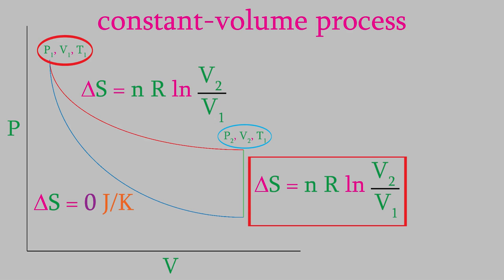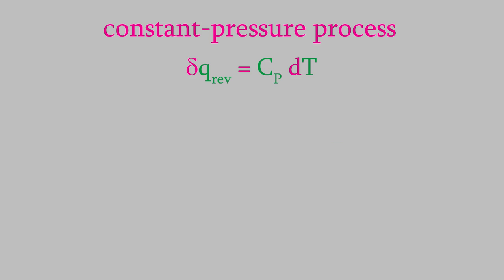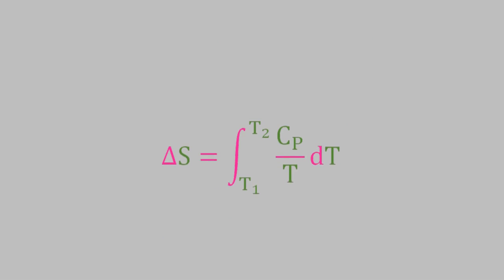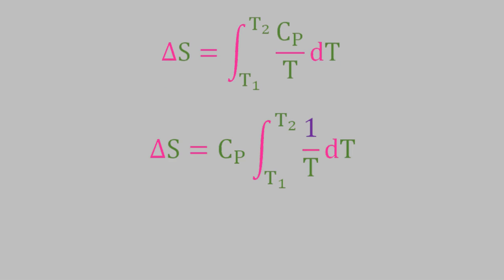Finally, let's take a look at a constant pressure process. The heat change for a constant pressure process is Cp delta T. Based on the Gibbs equation, we need to take the integral of the heat divided by T, so we need to solve this integral. If the heat capacity is a constant, which is nearly the case for liquids and solids, we can pop Cp out of the integral. If we then solve the integral, we find that delta S is equal to Cp times the natural log of T2 over T1.